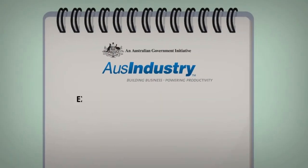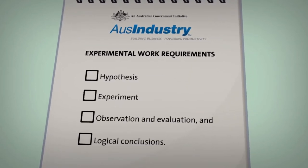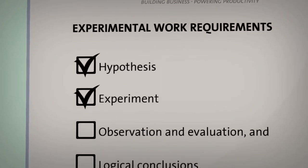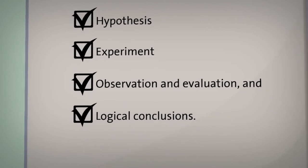Windwake's systematic progression of experimental work included the four interrelated parts required by the R&D tax incentive: Hypothesis, Experiment, Observation and Evaluation, and Logical Conclusions.